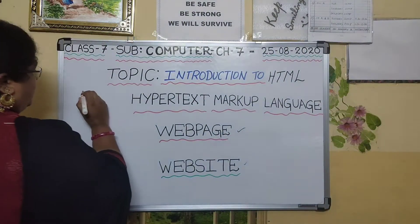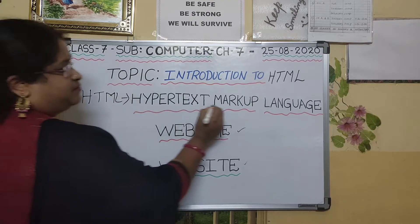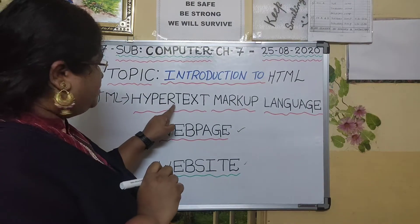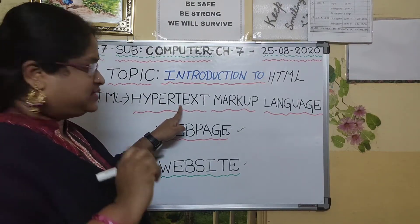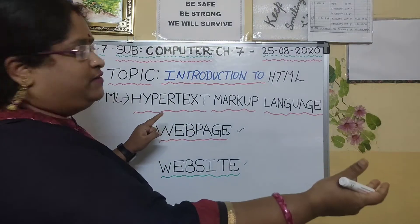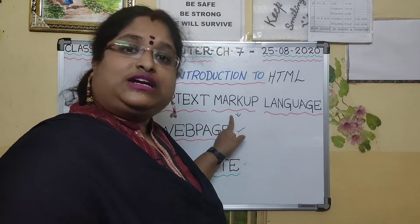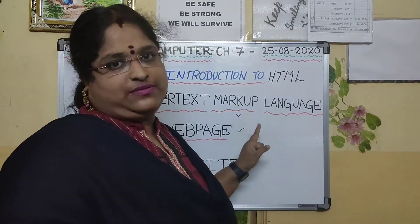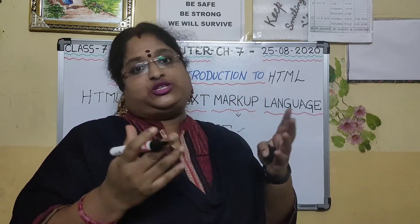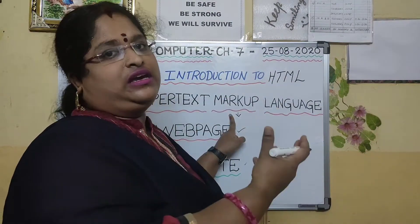So HTML stands for Hypertext Markup Language. What is hypertext, children? Hypertext refers to text — it is text that contains links to information in the same web page or other different web pages. And what is markup? Markup contains tags, and it instructs the browser how text and images should be displayed. So it is used to format and structure the content.